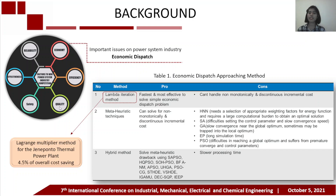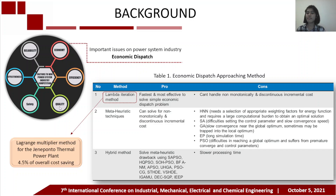Second, meta-heuristic techniques. This technique can solve for non-monotonically and discontinuous incremental cost. But there are several disadvantages: first, Hopfield neural network that needs selection of appropriate winning factors for energy function and requires large computational burden to obtain an optimal solution; second, simulated annealing that has difficulties setting control parameters and slow convergent speed; third, genetic algorithm that has slow convergence and may be trapped into local optimum; fourth, evolutionary programming that has long simulation time; and last, particle swarm optimization that has difficulties reaching a global optimum and suffers from premature convergence and control parameter issues.